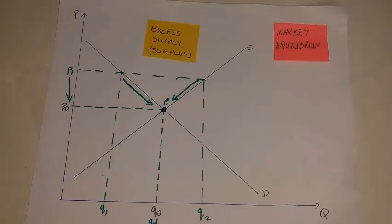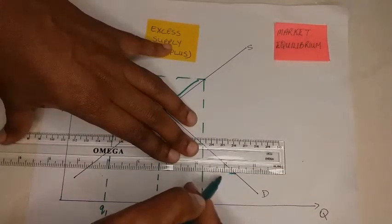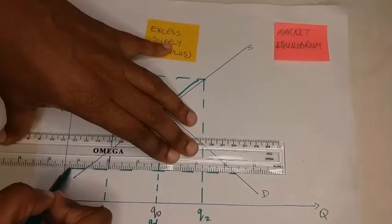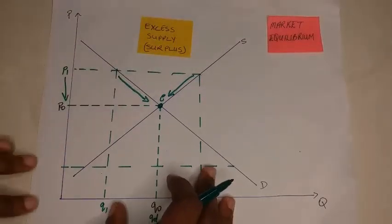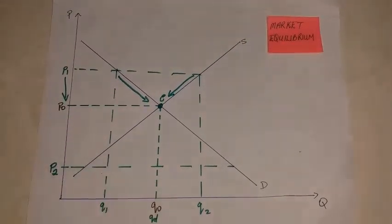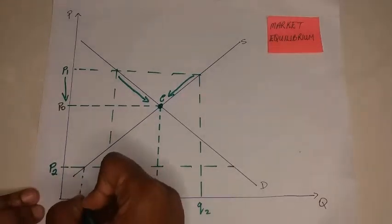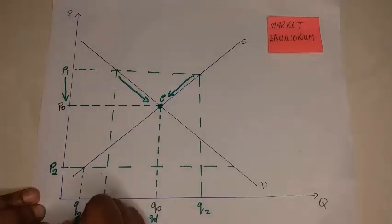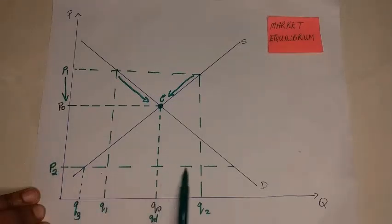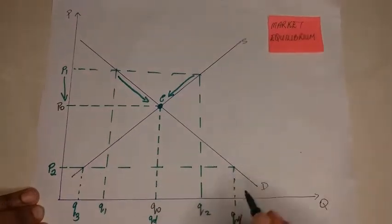Now let's look at another scenario where we have price being below the equilibrium point — we could look at a price such as p2. To determine quantity supplied and quantity demanded, we look to see where this price cuts these curves. At a price of p2, our quantity supplied will be at a value we can call q3, and where it cuts the demand curve we can call q4.